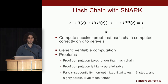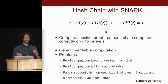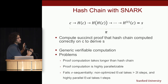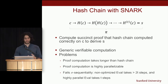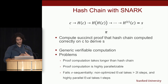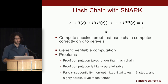One might think to pair a hash chain with a SNARK — a proof that the computation was done correctly, known as generic verifiable computation. We can compute a succinct proof that a hash chain was computed correctly. The problem is that computing the SNARK proof takes longer than computing the hash chain itself, and moreover the SNARK computation is highly parallelizable — so someone with lots of parallelism can finish in half the time of an honest unoptimized prover.